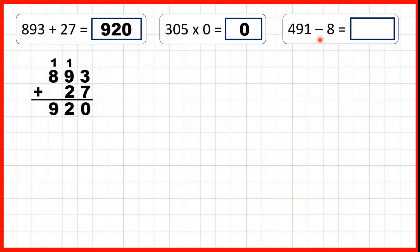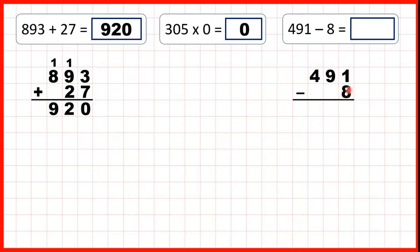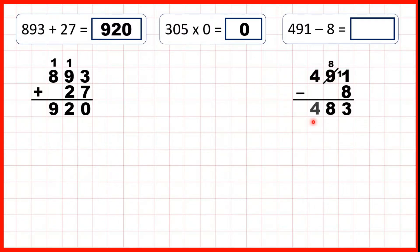491 minus 8. So we can set this out as a column subtraction, making sure we've got our 8 in our 1s column. We can't do 1 minus 8, so we go to the left, 1 less, 1 in front. And now, 11 minus 8 is 3, 8 minus nothing is 8, and 4 minus nothing is 4, so our answer is 483.